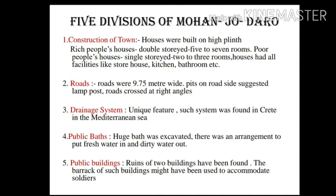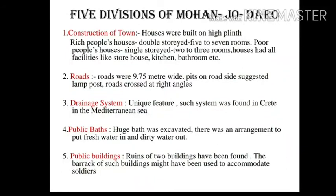The drainage system is a unique feature of Mohenjo-daro's town planning. The town had an underground drainage system where dirty water from houses was drained into a large gutter through a small drain pipe, and from there disposed out of the town through main pipes. There was a cesspit in every house where dirty water was collected, and when filled, excess water automatically flowed into the main gutter through a pipeline. A similar drainage system was also found in the island of Crete in the Mediterranean Sea. This shows that the people of Mohenjo-daro were very conscious about their health and hygiene.